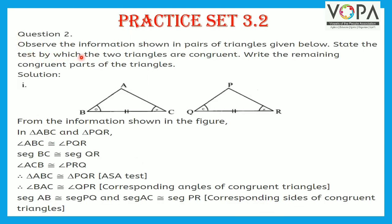Question 2. Observe the information shown in pairs of triangles given below. State the test by which the two triangles are congruent and write the remaining congruent parts. Here, triangle ABC and triangle PQR are shown with their angles and sides marked with similar signs. From the information shown in the figure, in triangle ABC and triangle PQR: angle ABC is congruent to angle PQR, side BC is congruent to side QR, and angle ACB is congruent to angle PRQ. Therefore, triangle ABC is congruent to triangle PQR by ASA test.